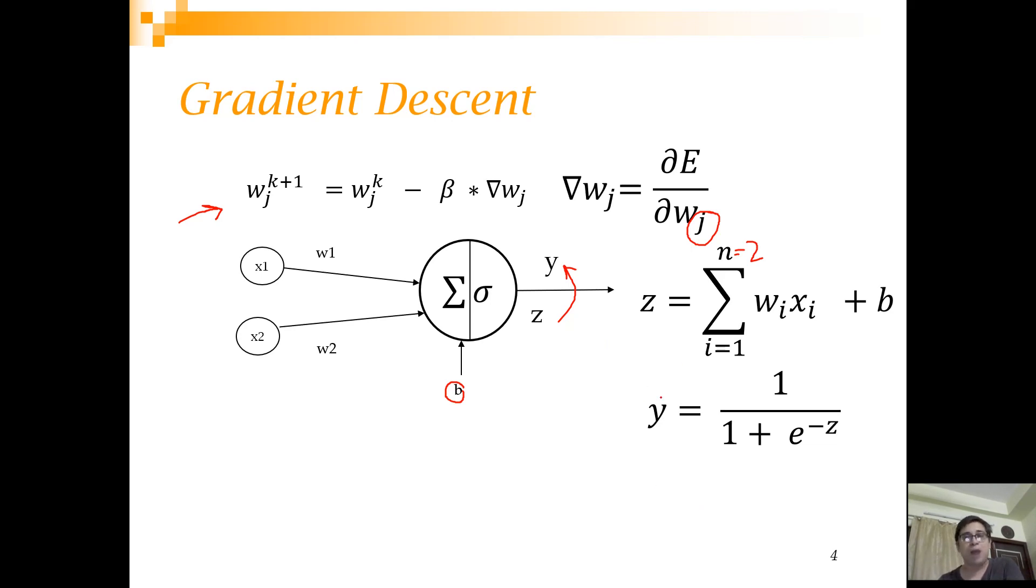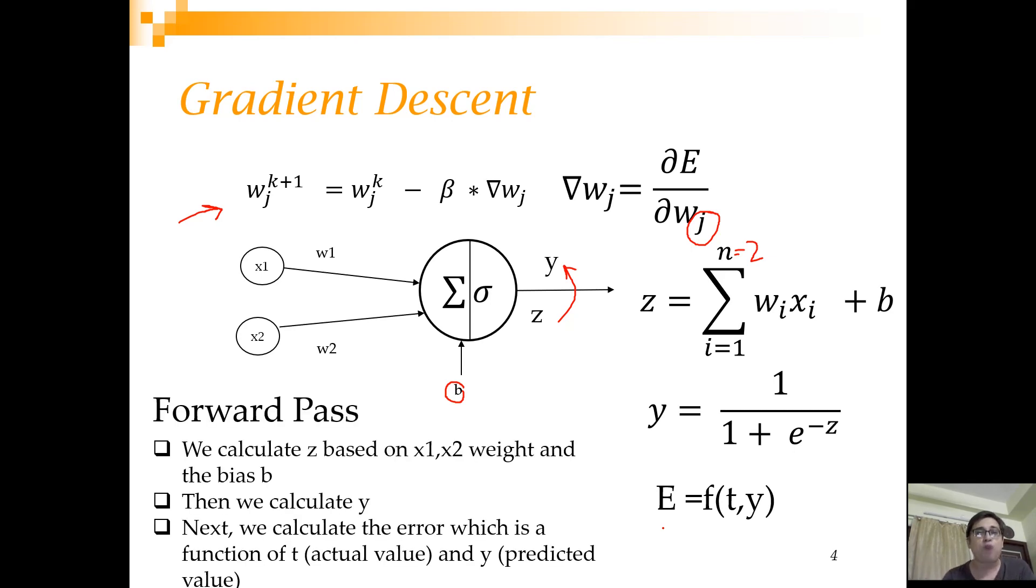Now this calculation, as we started from x1, x2, multiplied with W1, W2, went to calculate z, then y, then finally E. You can think of this as a flow of computations. This flow of computations which starts from the input values and goes up to the error is called the forward pass or the forward propagation.